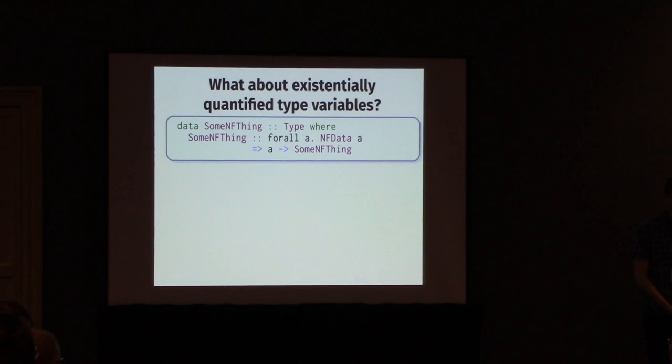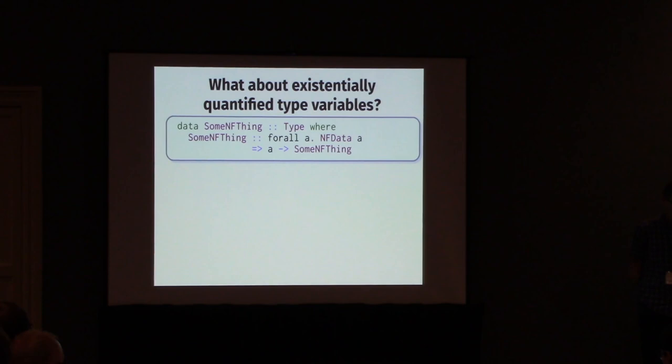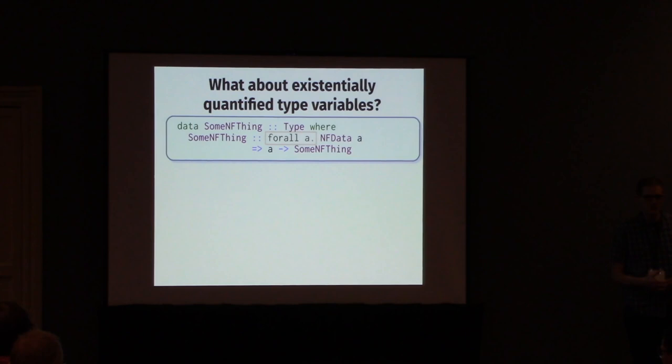Now for the interesting part of the talk - this is where things are going to get a bit hairy. Existential quantification of type variables is the thing that gave me the most trouble when trying to figure out how to implement all this. Some sacrifices had to be made to get to where I am today, but this might get better in the future. The thing to note here is that we had this existentially quantified type variable A in the some NF thing constructors - this doesn't appear anywhere in the return type. The return type is completely local to the constructor. Trying to represent that is going to be a bit of a challenge.